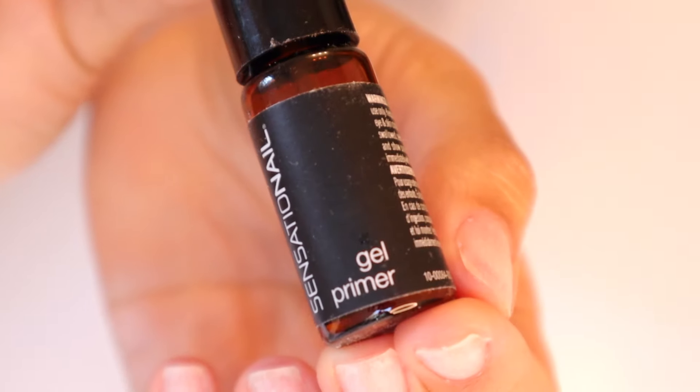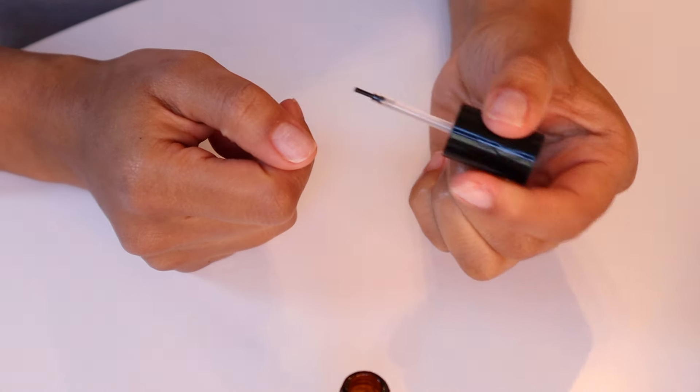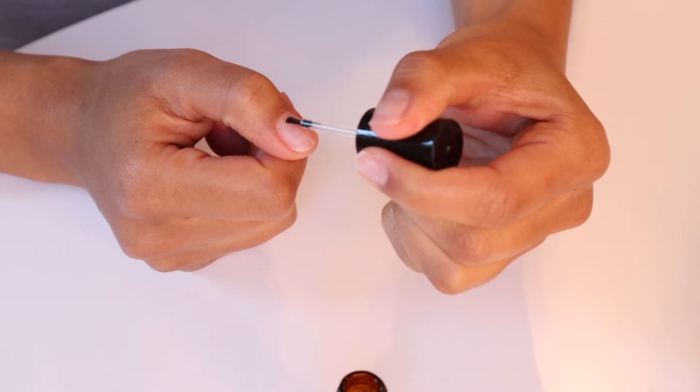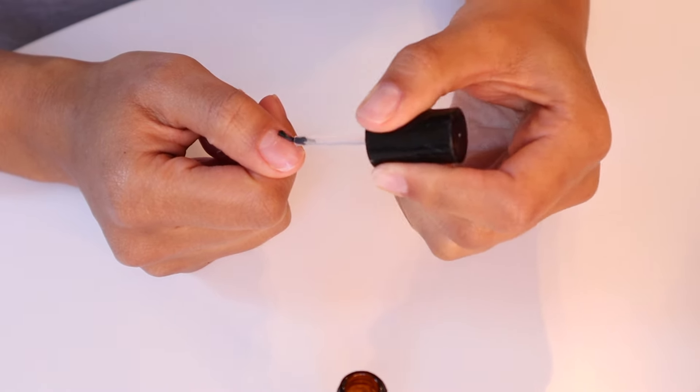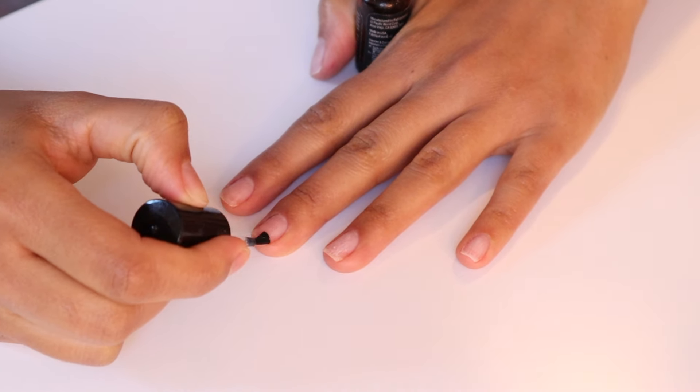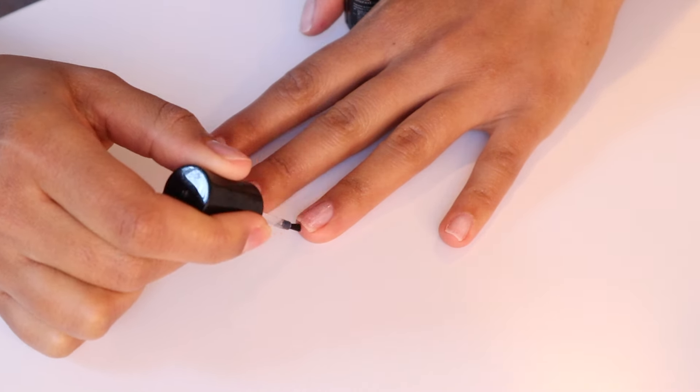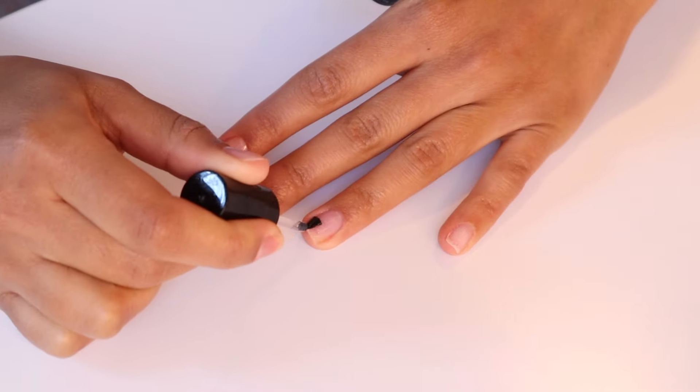But before we do that, we're going to apply a gel primer which is super important. It's going to act similar to the alcohol. It's going to dehydrate your nail, and what this is going to do is it's going to help the gel polish stick to your nail and last longer.